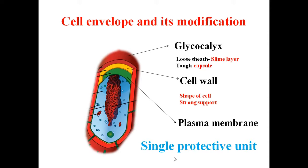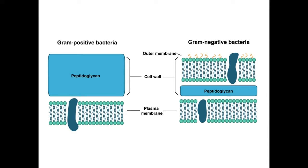Based on the response to Gram staining, scientists developed the classification of gram-positive and gram-negative bacteria. Gram-positive bacteria have two layers: peptidoglycan cell wall and plasma membrane. Gram-negative bacteria have three layers: outer membrane, peptidoglycan, and plasma membrane. Note that gram-positive bacteria have a thick cell wall, while in gram-negative bacteria, the peptidoglycan layer is thin.